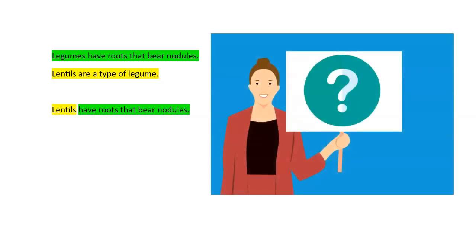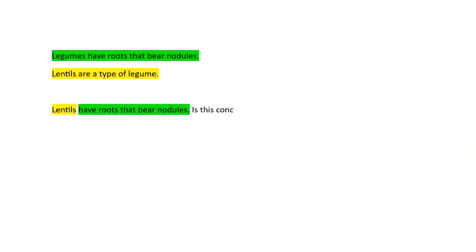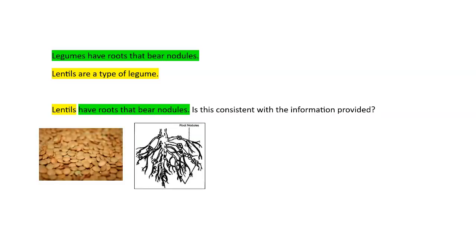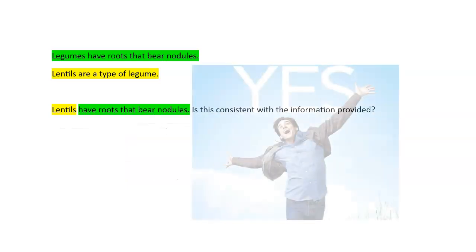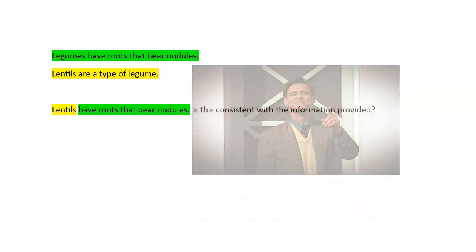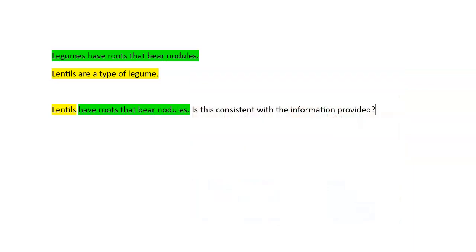Perhaps we can then add, is this consistent with the information provided? Okay, so now we've made this a question and we have to give an answer. Well, is it correct? And what we probably do is we go through the premises and say, okay, legumes have roots that bear nodules, lentils are a type of legume and we can say, well, that does look like it supports the argument or the conclusion that lentils have roots and bear nodules. And we would say, yes, it's consistent. It's true.